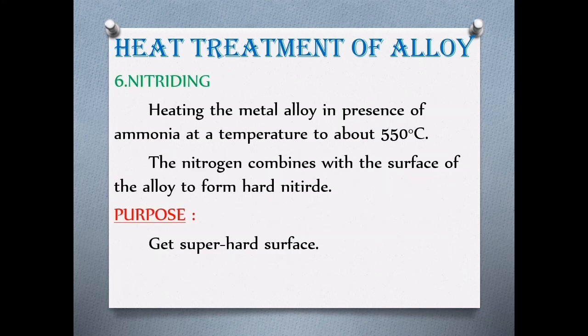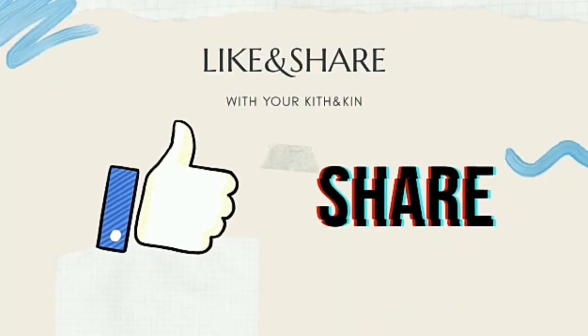Nitriding involves heating a metal alloy in ammonia gas at 550 degrees Celsius. The ammonia dissociates and releases nitrogen. The nitrogen is absorbed by the surface to form a hard nitride layer, producing a very hard surface.